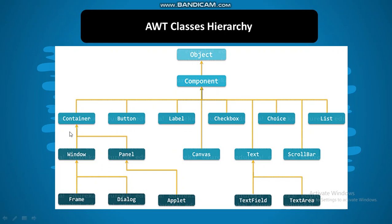These container subclasses are used to create windows. The component class contains classes for creating graphical elements — for example, button class to create a button, label class, checkbox class, choice list, text field, text area, and scroll bar. In the next session we will learn how to create these windows using AWT.